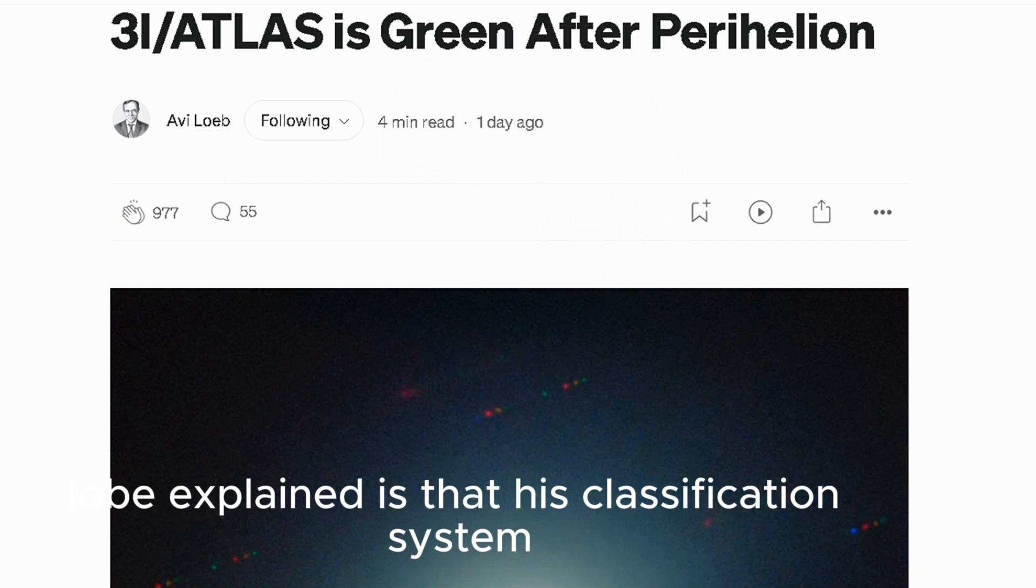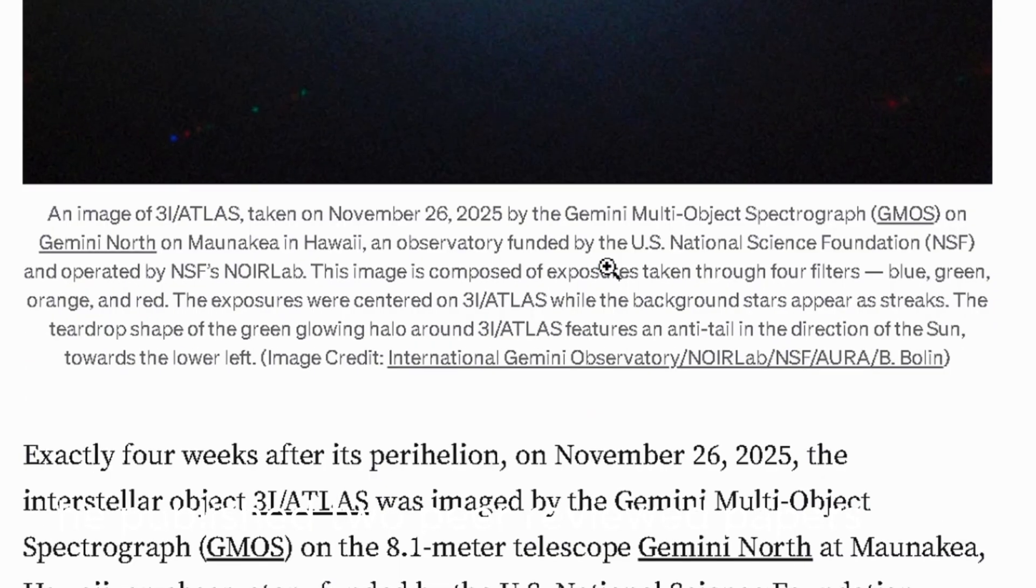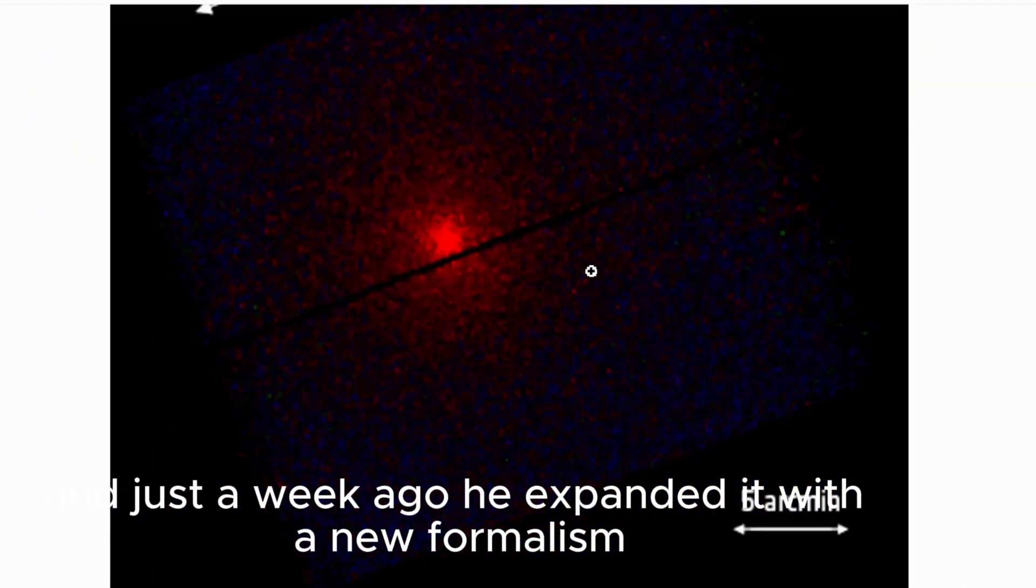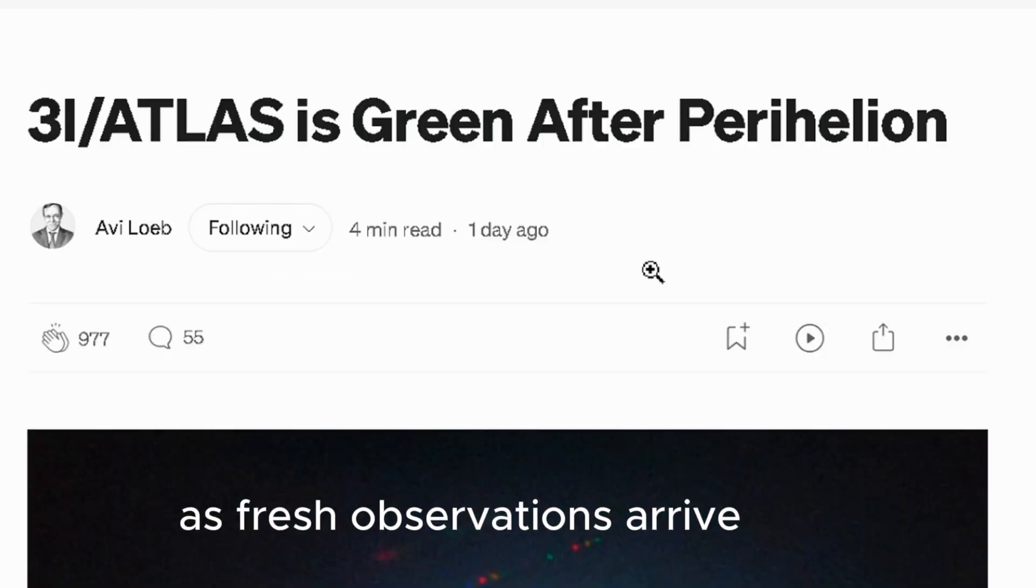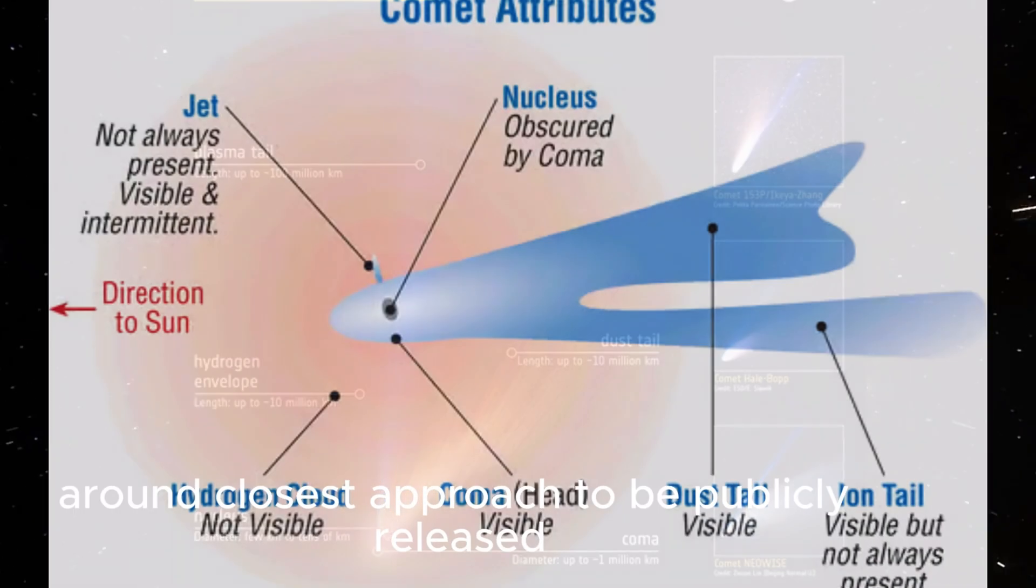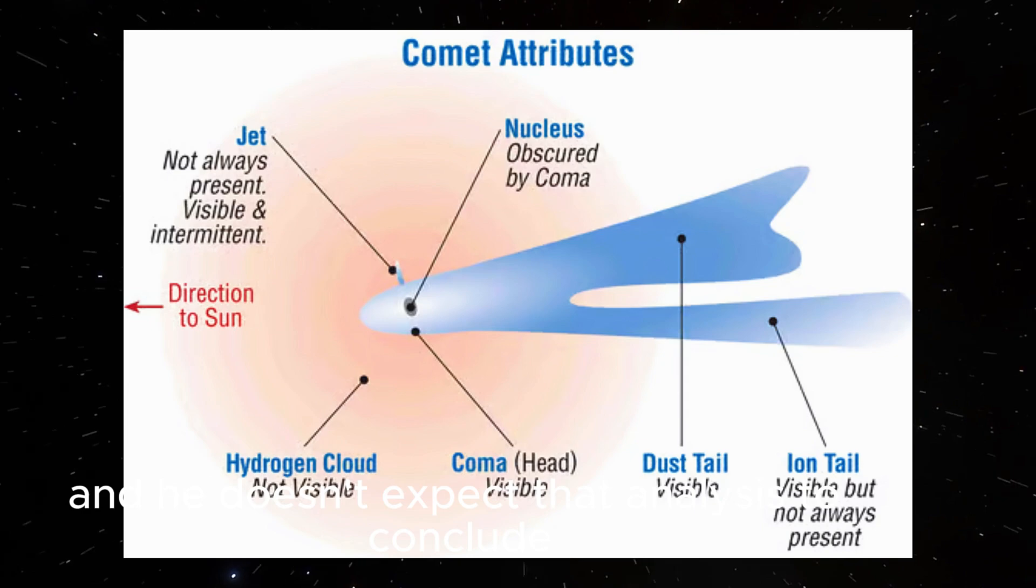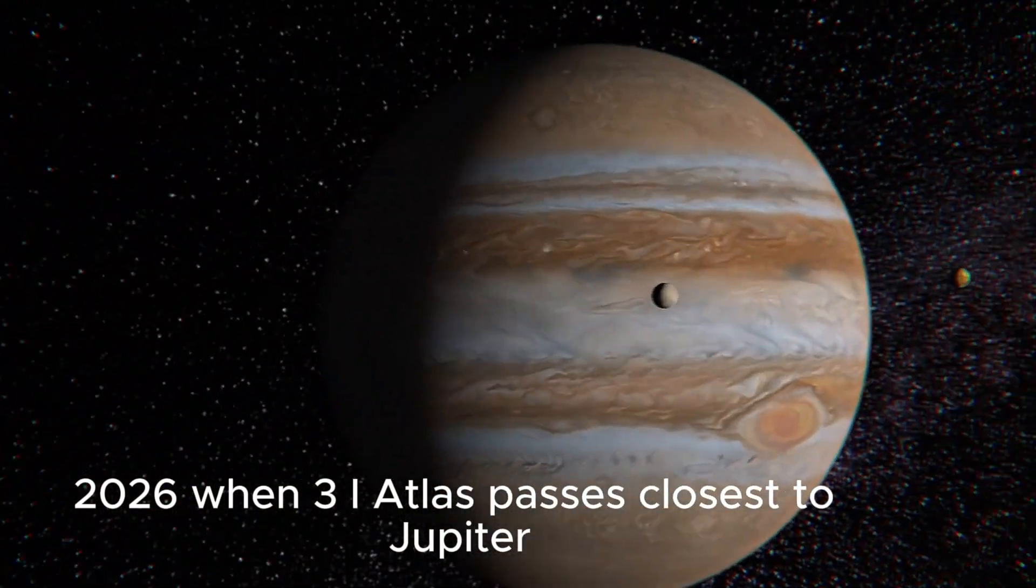And let me walk you through why that refusal is actually significant. The first thing Loeb explained is that his classification system is designed to evolve as new data comes in. He published two peer-reviewed papers establishing this quantitative framework. And just a week ago, he expanded it with a new formalism that shows how rankings should change as fresh observations arrive. But instead of rushing to revise the score, Loeb said he's waiting. Specifically, he's waiting for data from the period around closest approach to be publicly released and fully analyzed. And he doesn't expect that analysis to conclude before March 16, 2026, when 3i Atlas passes closest to Jupiter.